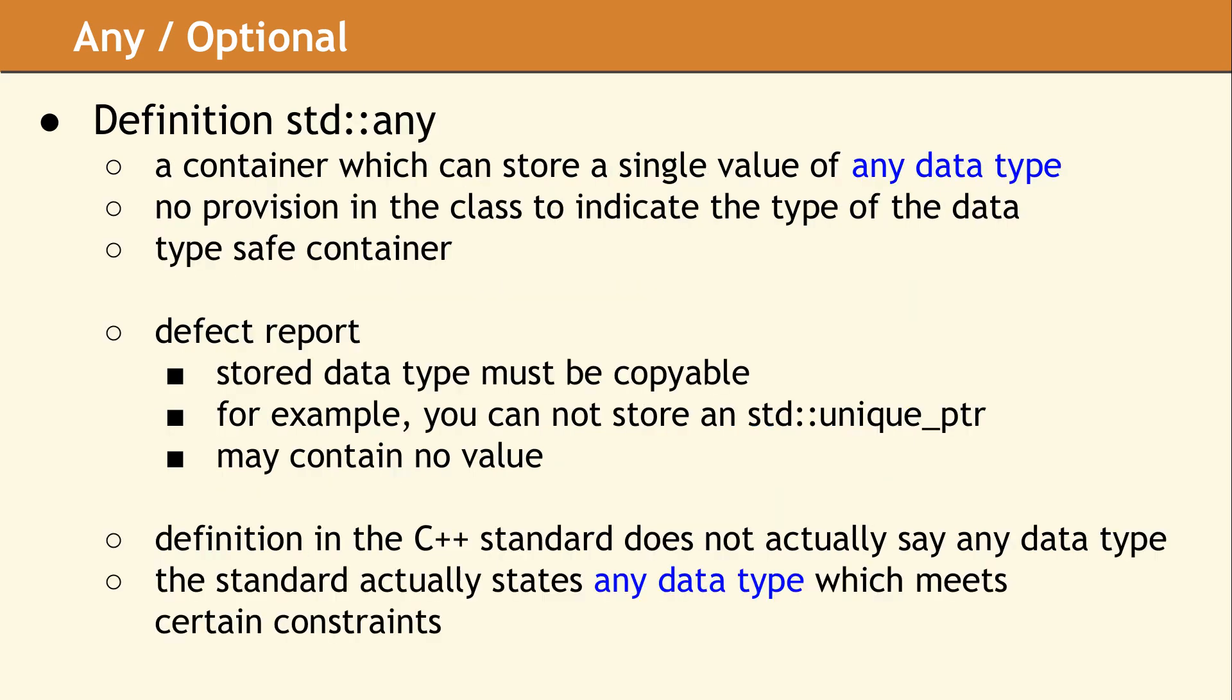The class std::any is a container for a single value of any data type. The Any class is not a template, so there is no provision to specify the type of data it should contain. It is referred to as a type safe container. However, the common definition is simplistic and perhaps a bit misleading.